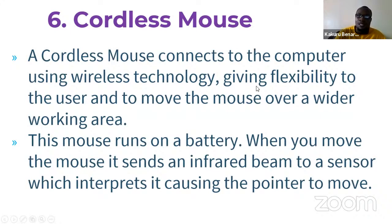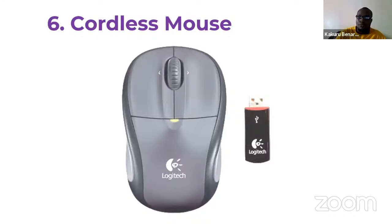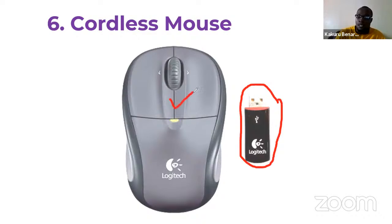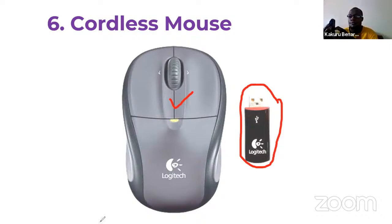A cordless mouse connects to the computer using wireless technology, giving flexibility to move the mouse around a wider working area. The mouse runs on a battery. When you move the mouse, it sends an infrared beam to a sensor, causing the pointer to move. You attach a small receiver into one of the ports of the system unit, and the mouse will be able to communicate with it. Inside the mouse you place batteries, then you can start using it.